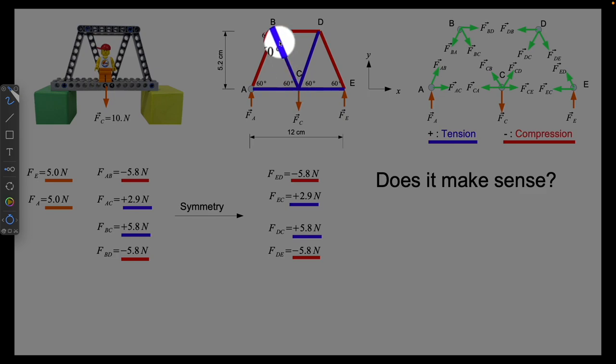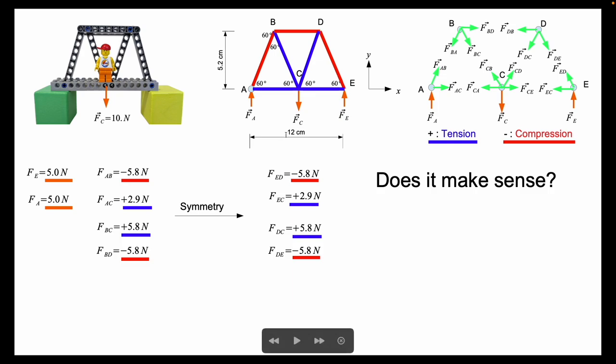Well, what do I get if I replace these blue members by a string? Well, correctly, an arc suspension bridge.